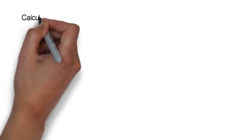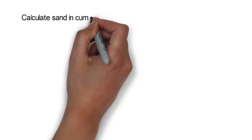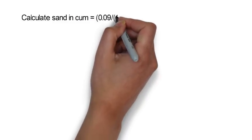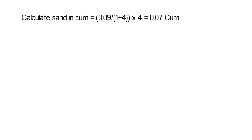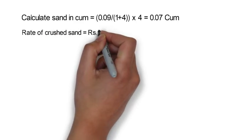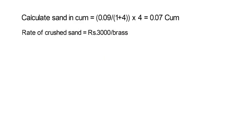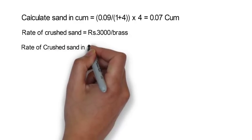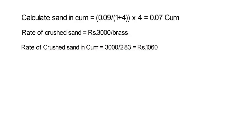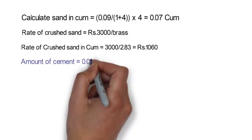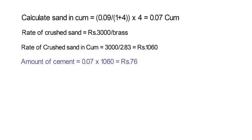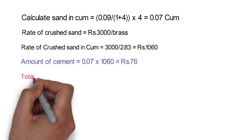Now we will calculate sand in cubic meters. The formula is 0.09 divided by (1 plus 4) into 4 is equal to 0.07 cubic meter, where sand is 4 times the cement in the proportion. We consider the rate of crushed sand at 3,000 rupees per brass, which is 3,000 divided by 2.83 is equal to 1,060 rupees per cubic meter. The amount for sand shall be 0.07 x 1,060 is equal to 76 rupees.